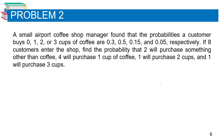Problem number two: A small airport coffee shop manager found that the probabilities a customer buys 0, 1, 2, or 3 cups of coffee are 0.3, 0.5, 0.15, and 0.05 respectively. If 8 customers enter the shop, find the probability that 2 will purchase something other than coffee, 4 will purchase 1 coffee, 1 will purchase 2 cups, and 1 will purchase 3 cups.